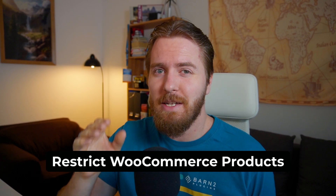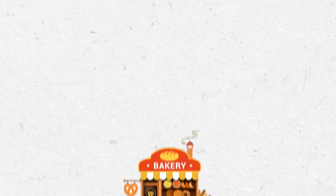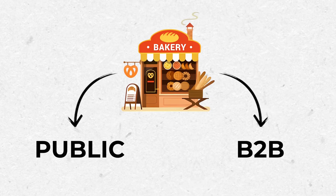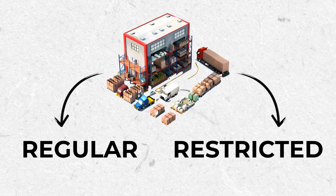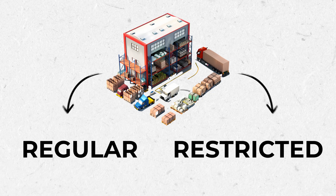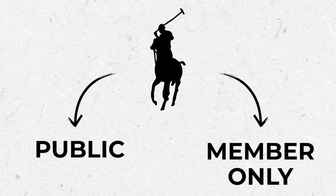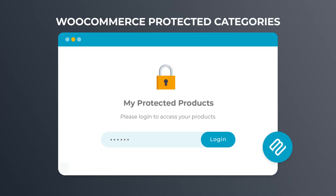Thousands of merchants using WooCommerce need a way to restrict specific products from public view. Take for example a bakery selling to local restaurants as well as the public, or an industrial supplier selling hazardous goods along with their regular materials, or perhaps an apparel brand releasing an exclusive member-only merch drop. There are literally countless reasons why some stores would want to hide their product categories from non-members. So today I'll show you how to set this up with the help of our WooCommerce Protected Categories plugin.